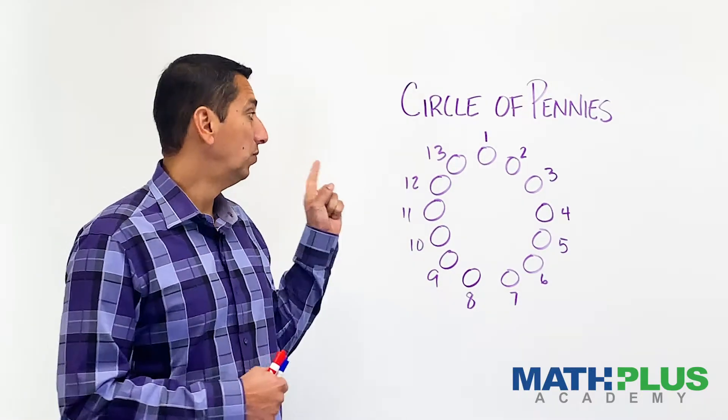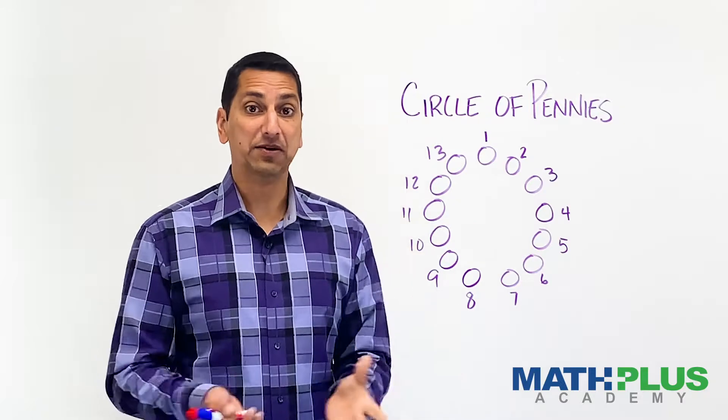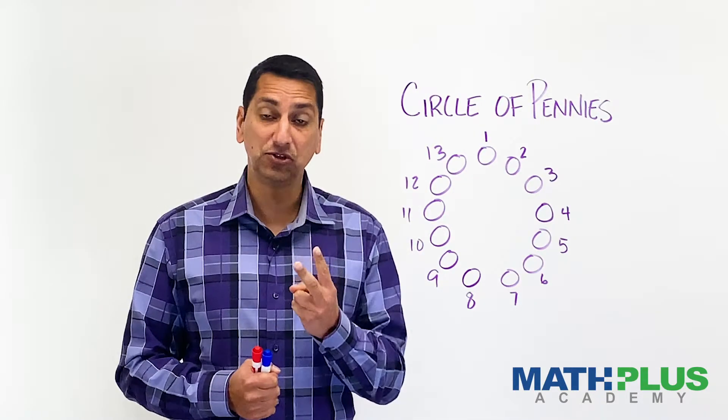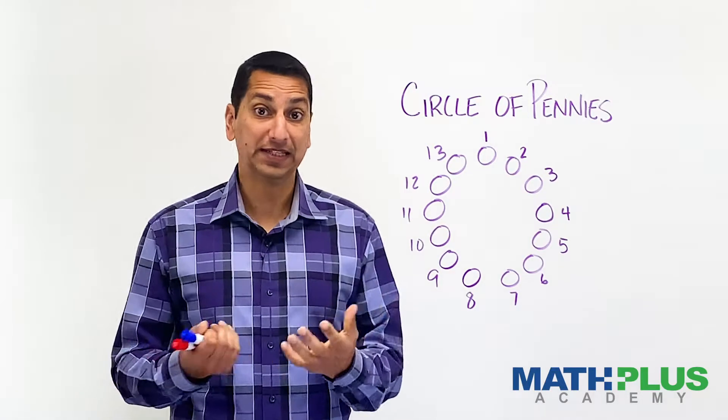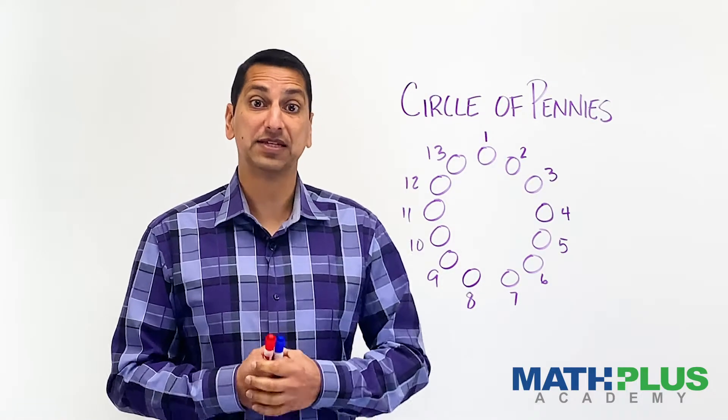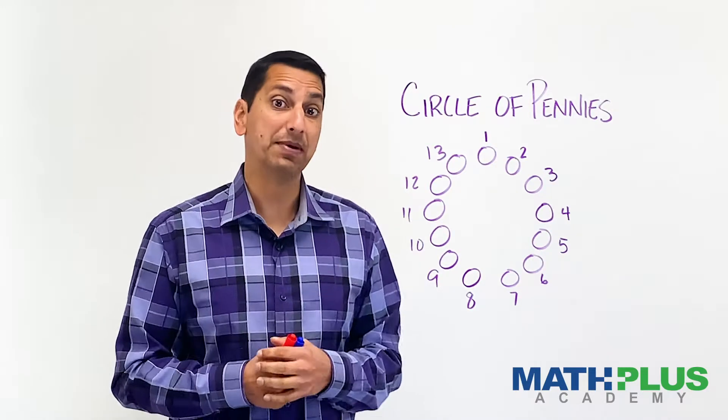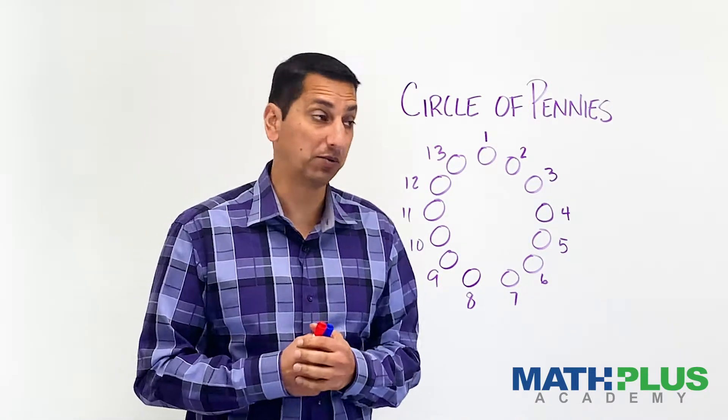You can take one or two pennies from anywhere in the circle, but if you take two, they have to be adjacent to each other. So that's it, and you want to be the person who takes the last penny. I'll show you how a game might play out so you can see how it works.